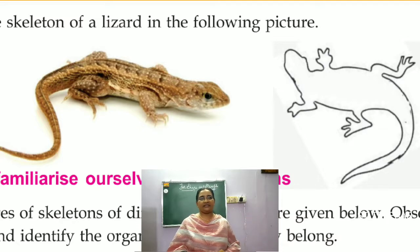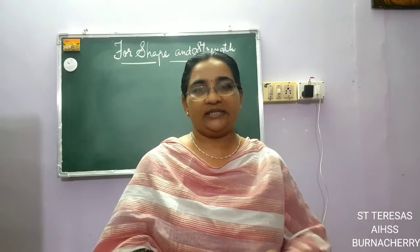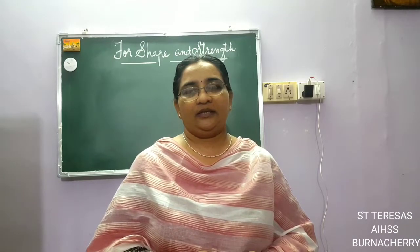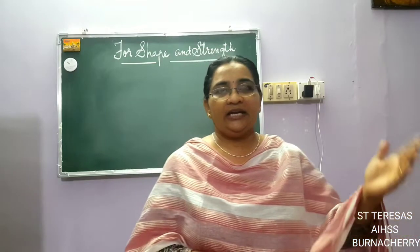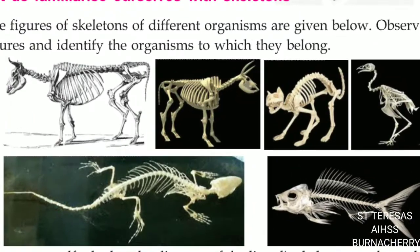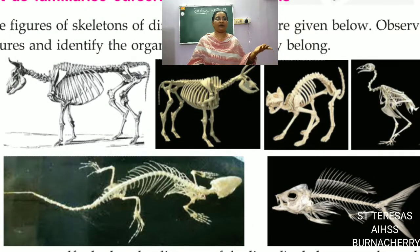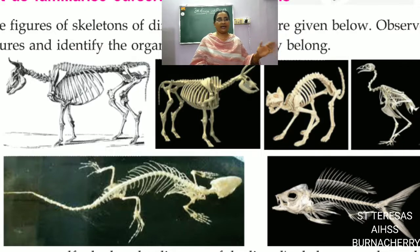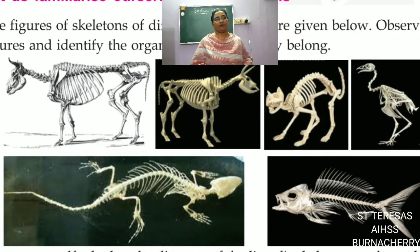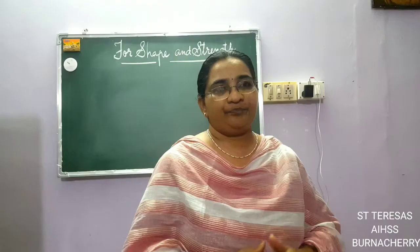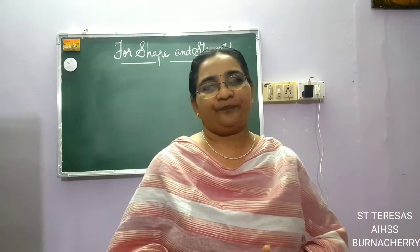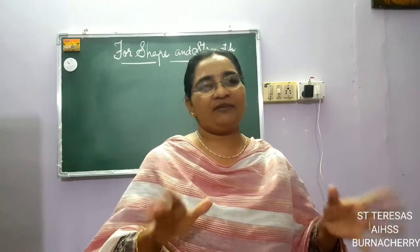Now look at the figures of skeletons of many different animals — birds, fish, lizard, horse or donkey, cow, cat. Observe and identify the organisms to which they belong, write down the name of the animal, then compare it with the skeleton picture you have drawn.